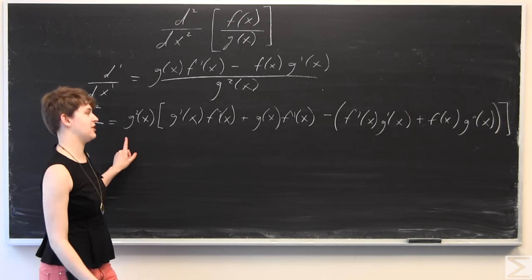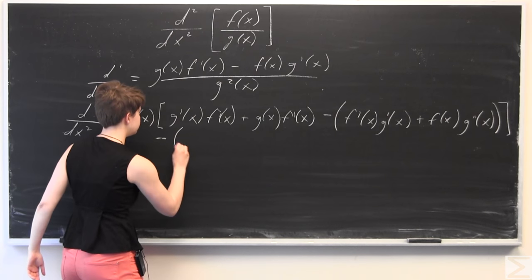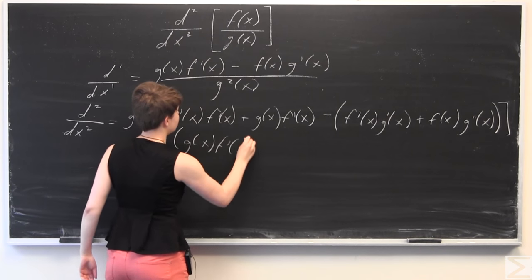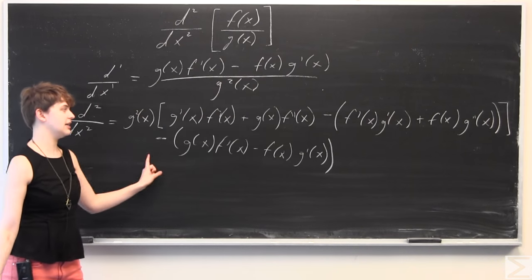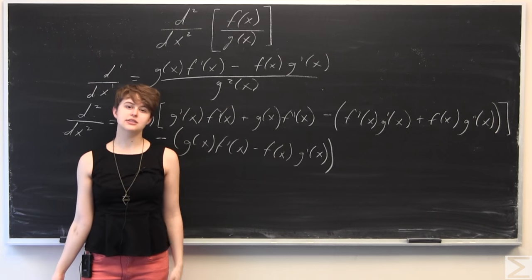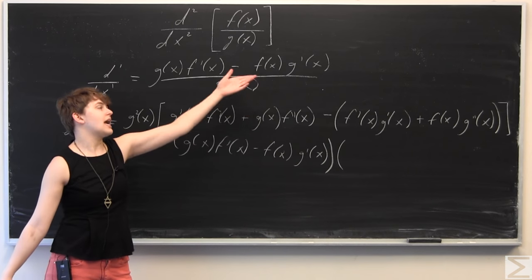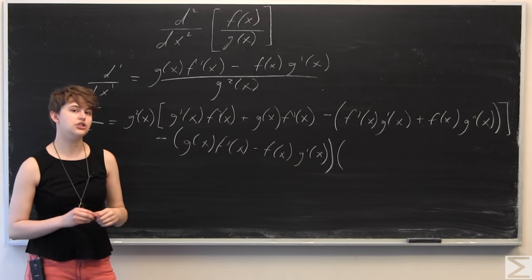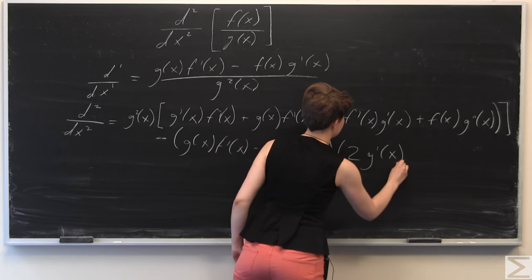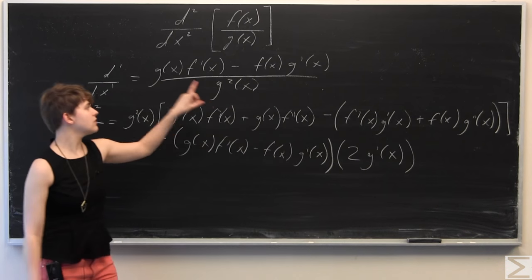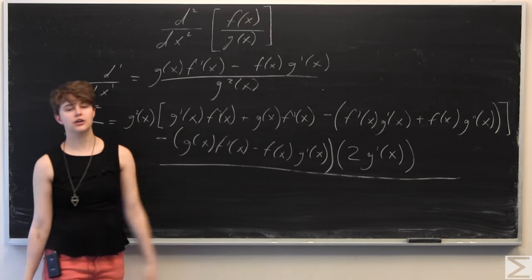So this is part of the numerator — low d-high, less high d-low. So high: we copy down everything in the numerator: g(x)·f′(x) − f(x)·g′(x). Now we differentiate g²(x) with respect to x. This isn't just like x², so we can't just do 2x — we use the chain rule, giving 2g′(x). Then, low squared will go — we square the denominator again and get g⁴(x).